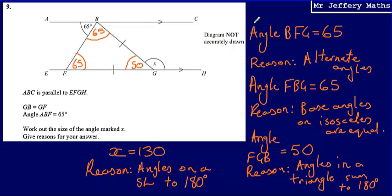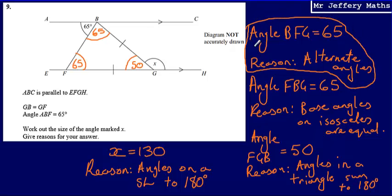Just to recap: the nicest way to set out your work when answering these questions is to state an angle you know and then give the reason, working through it very methodically — angle, reason, angle, reason. When it says 'give reasons for your answer,' it means give angle facts and say why you've done the calculation. The reasons can be worth half of the marks on these types of questions.